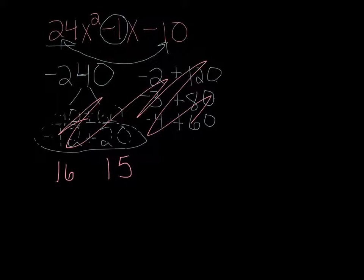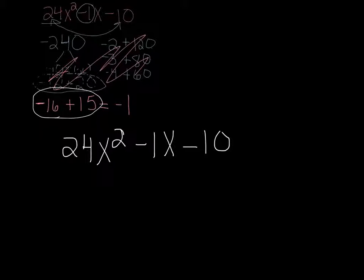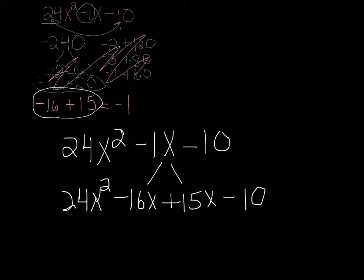We need one of them to be negative, so we want the larger one to be negative. Because when we add them together, we get negative 1. Now we're ready. We have our two, we'll call these our two special numbers. Because what we're going to do is take the original problem. So we had 24x squared minus 1x minus 10, and we're just going to change this minus 1x to negative 16x plus 15x. Now think about that. If you add those together, you get the same thing, so the problem hasn't changed. We're just making it look different.